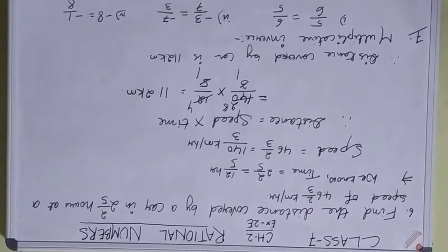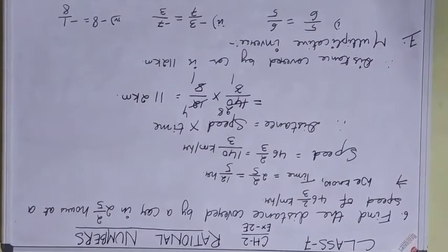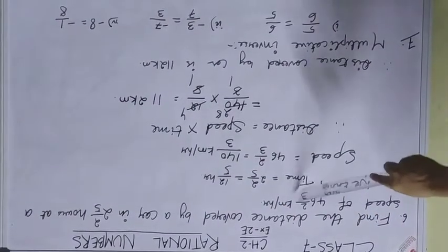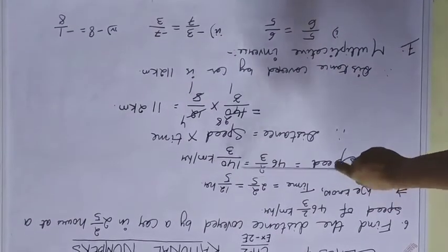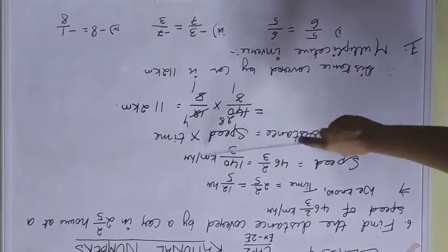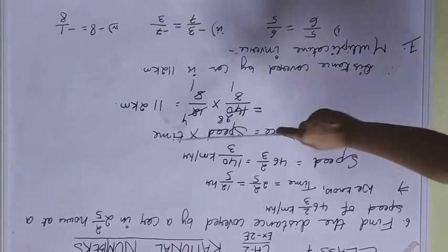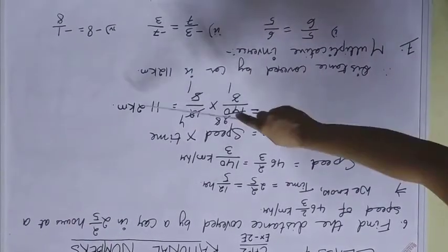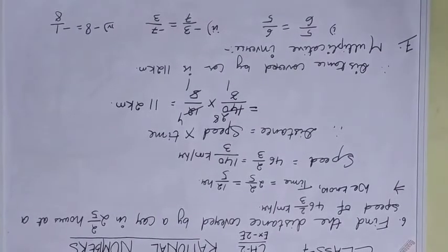Question 6: Find the distance covered by a car in 2/5 hours at a speed of 46 2/3 km per hour. We have time which is 12/5 hours and speed is 140/3 km per hour. Distance equals speed into time, so 140/3 into 12/5 gives you 112 km.